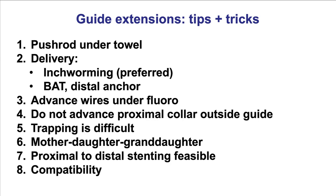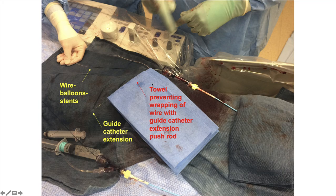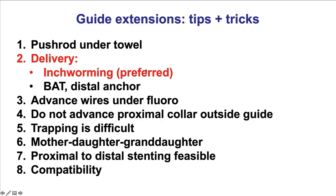Here are some tips and tricks when using a guide extension. The first one is to place the pushrod under a towel. The reason is that otherwise there can be entrapment or intertwining between the guide wires and the pushrod. So to prevent that, immediately after the guide extension is placed in, it should be placed under a towel so there is no wrapping of the guide wires with the pushrod. It can be a very frustrating experience to spend 5–10 minutes delivering the guide extension to the target lesion, and then no balloons or stents will go because of wrapping around of the pushrod with the guide wires.